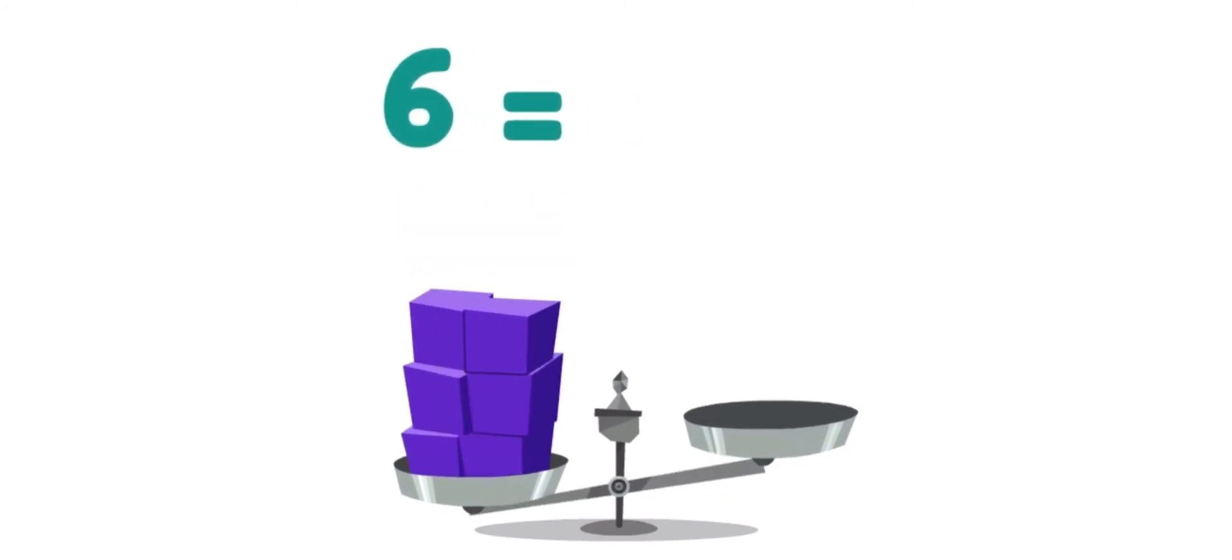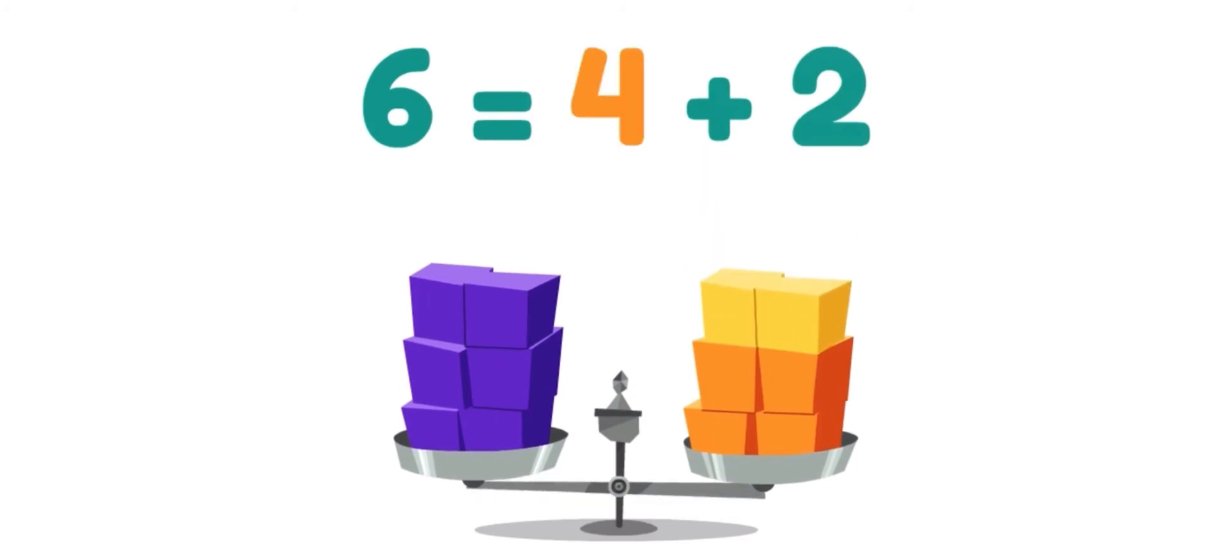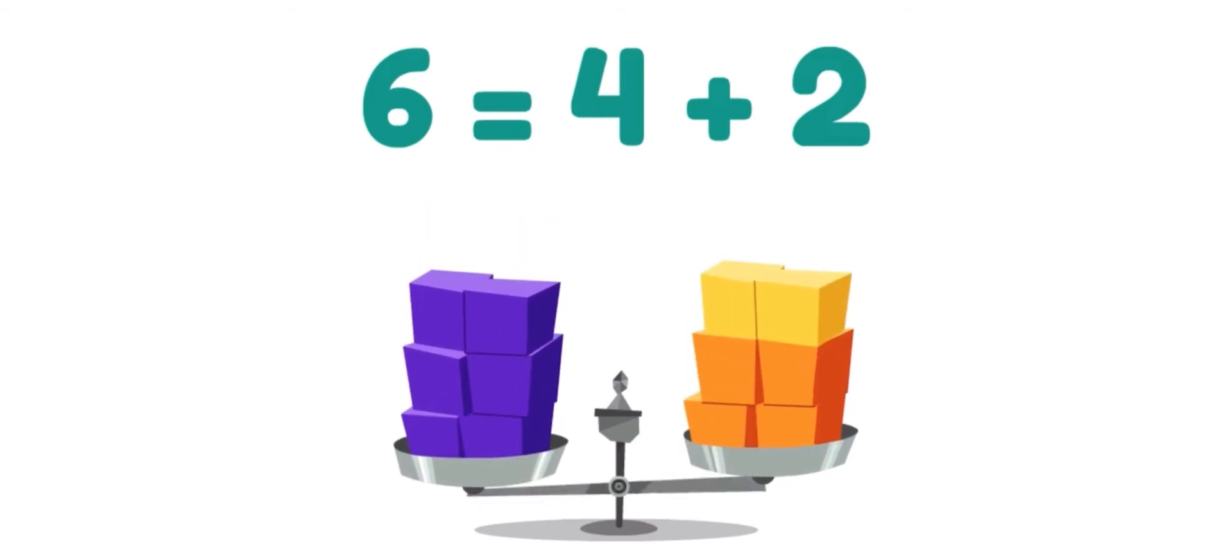This side has six, and this side has four plus two. Four plus two? That's six! So this side has six, and this side has six. The equal sign was right. Both sides are the same.